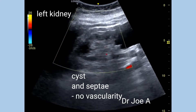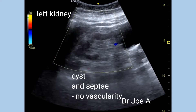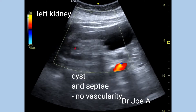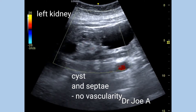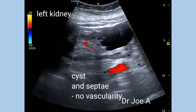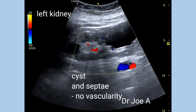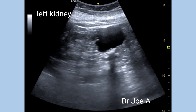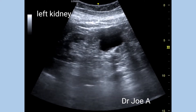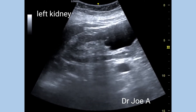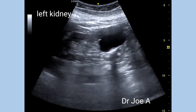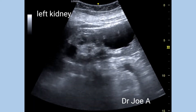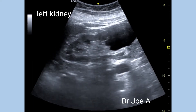Color Doppler ultrasound shows lack of vascularity of the cyst and the septae. Type 2F means this is a Bosniak type 2 cyst which needs follow-up — hence the 'F' for follow-up. This type of Bosniak type 2F cyst has less than 5% chance of malignancy.